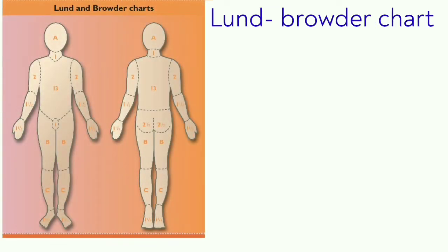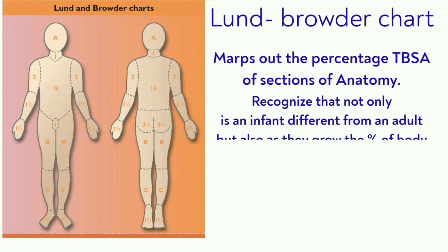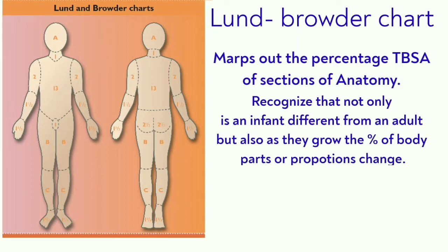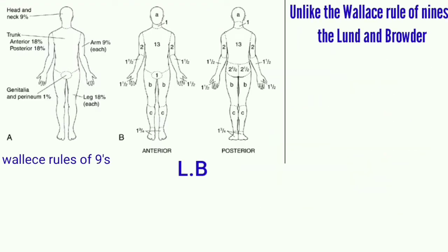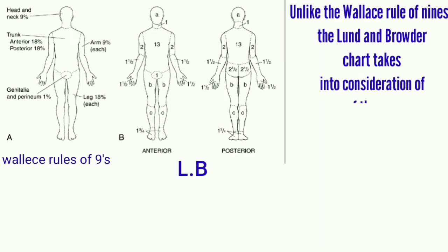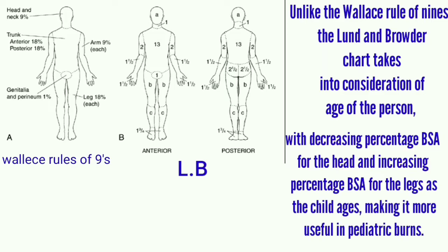Another accurate way is to draw the burn on the Lund and Browder chart, which maps out the percentage of total body surface area of sections of our anatomy. The Lund and Browder chart recognizes that not only is an infant different from an adult, but also as they grow, the percentage of their body proportions change. Children tend to have a larger body surface area compared to adults, so the TBSA of various anatomical parts — especially the head and legs — changes with growth. Unlike the Wallace Rule of Nines, the Lund and Browder chart takes into consideration the age of the person, with decreasing percentage BSA of the head and increasing percentage BSA of the legs as the child ages, making it more useful in pediatric burns.